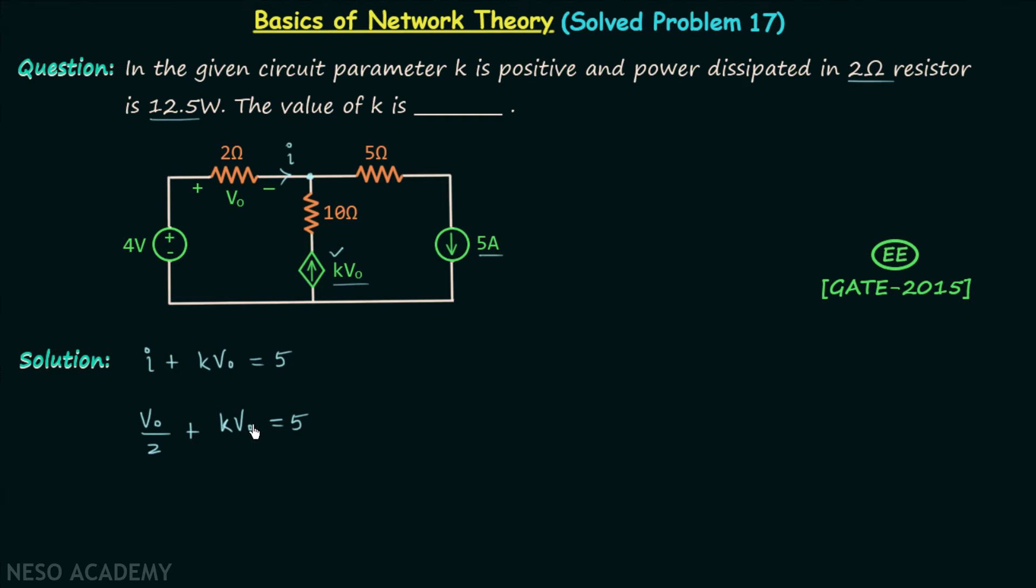We can take v0 common from the two terms, and therefore we will have v0 times (1/2 plus k) equal to 5, or we can write k is equal to 5 divided by v0 minus 1/2. Let's call this equation number 1.